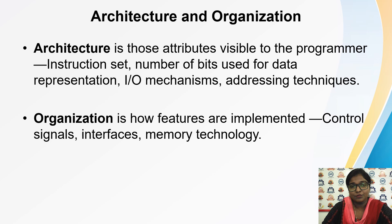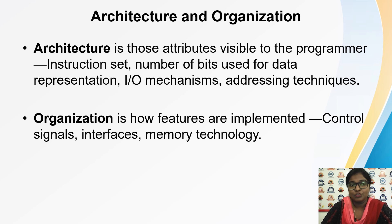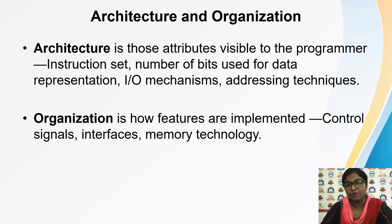These two terms — architecture and organization. Architecture simply means the art or science of designing any object. In the real world, every object has some architecture. If you consider a building, the building has architecture with physical characteristics. Similarly, in a computer there will be small functional units, and how they are specified, described, and how many are required — that is called architecture. Then organization is the implementation of that architecture.